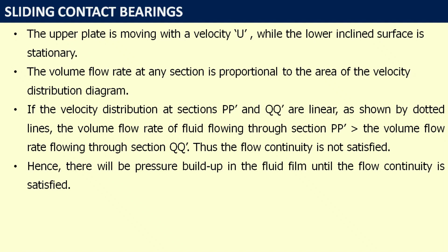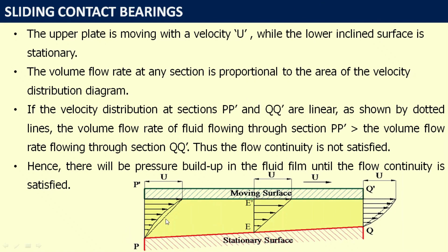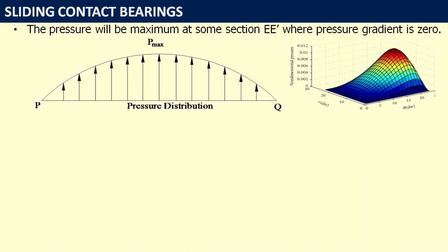Therefore, there will be a pressure build-up in the fluid film until flow continuity is satisfied. The actual velocity distribution (shown by dark lines) differs from the identical dotted-line distribution. The pressure will be maximum at some section E-E' where the pressure gradient dP/dx is zero. In the three-dimensional diagram, pressure varies from the inlet, reaches a maximum where the slope of the pressure curve is zero, and then decreases again toward the exit.